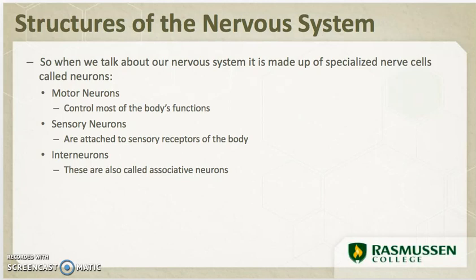Sensory neurons are attached to sensory receptors in your body, typically those like your fingertips, your toes, your eyes, your ears, your nose — things related to the five senses. They transmit sensory information from those receptors to the central nervous system through the peripheral projection. Sensory neurons lack a true dendrite; they are sheathed but more closely resemble axons than actual neurons.